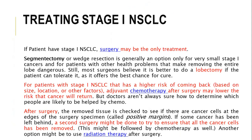Stage 1 is also treated by surgery and does not generally need chemotherapy, though some patients may require it where there is a chance of recurrence. Surgeons mostly perform lobectomy so that the cancer does not recur. After surgery, the removed tissue is checked for cancer cells at the edges of the specimen. If cells remain, another surgery may be performed, and radiation therapy after surgery is another option.